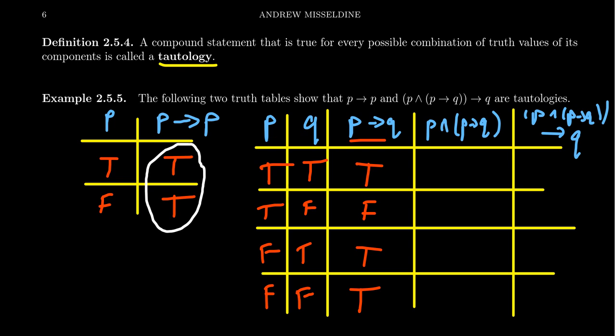Now for the next one, p and p implies q, we're going to look at this column and this one, the first and third columns. True and true is true. True and false is false. False and true is false. And false and true is in fact false.